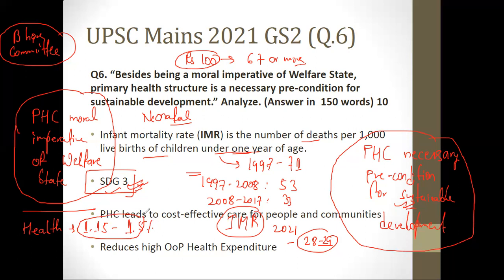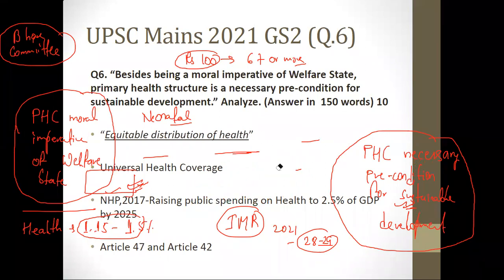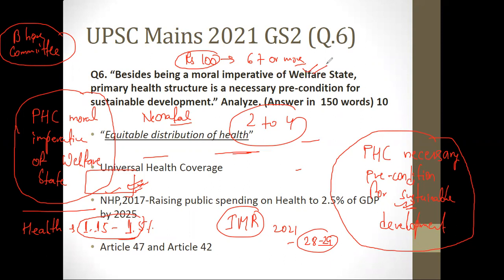National Health Policy 2017 says India should raise public expenditure on health to 2.5 percent of GDP by 2025. Even developing countries like Ghana, Thailand, Sri Lanka, China, and South Africa are spending around 2 to 4 percent of GDP on health. If we increase spending and allocate two-thirds or more to primary health care as NHP 2017 recommends, it will play a crucial role in improving primary health structure, furthering the attributes of sustainable development.